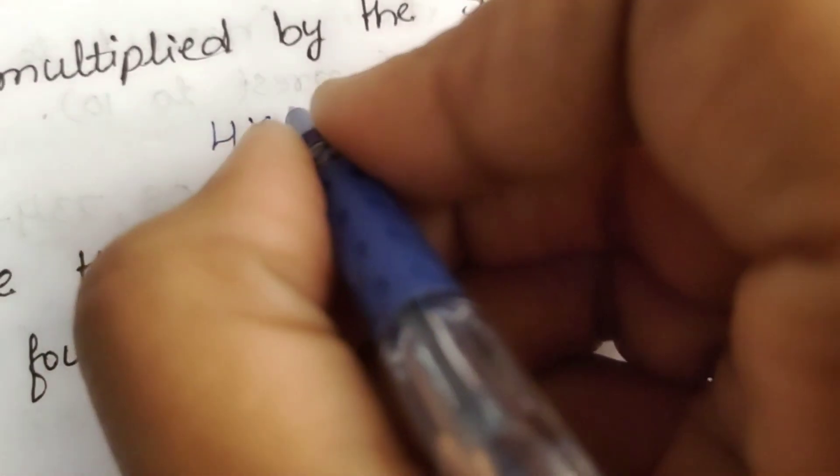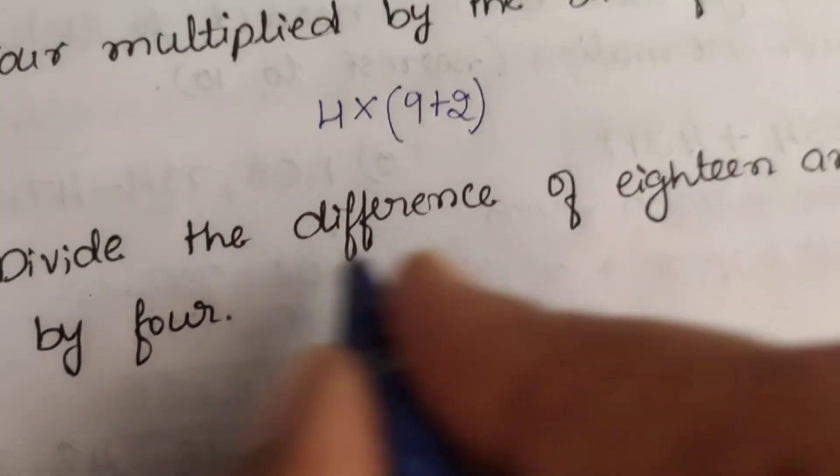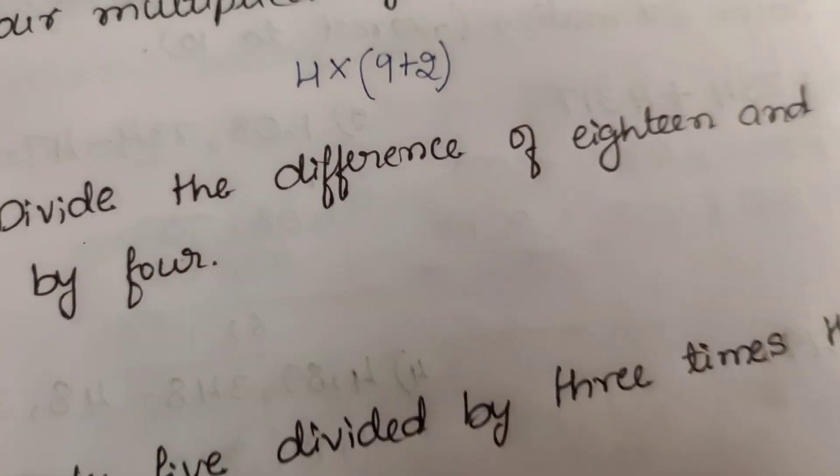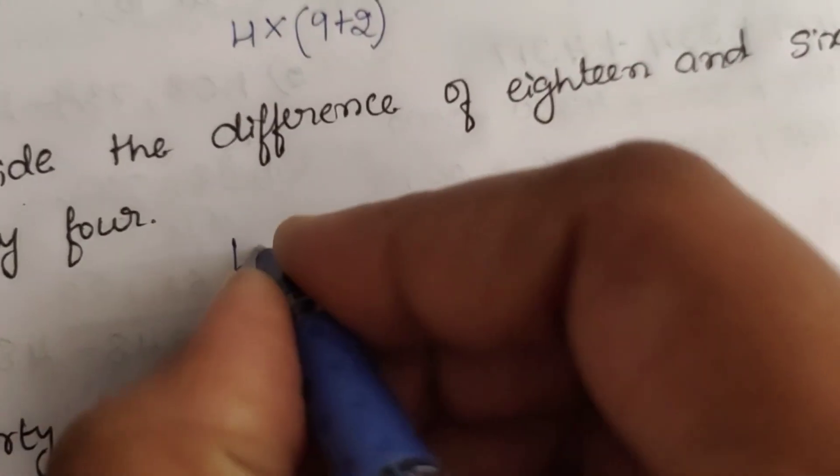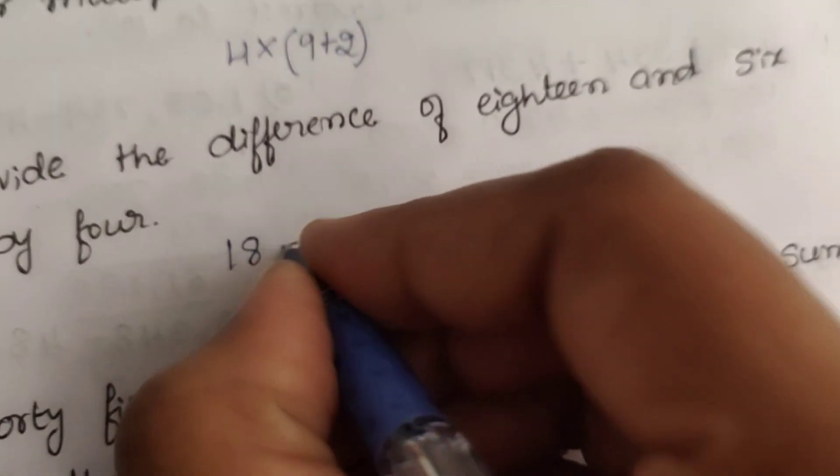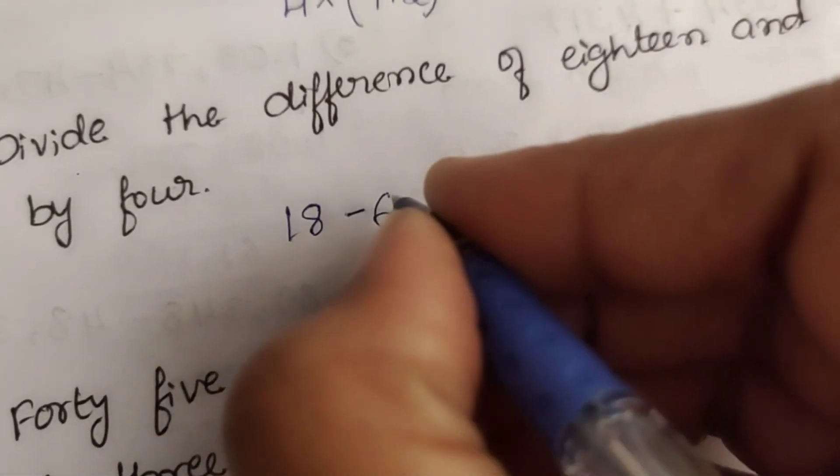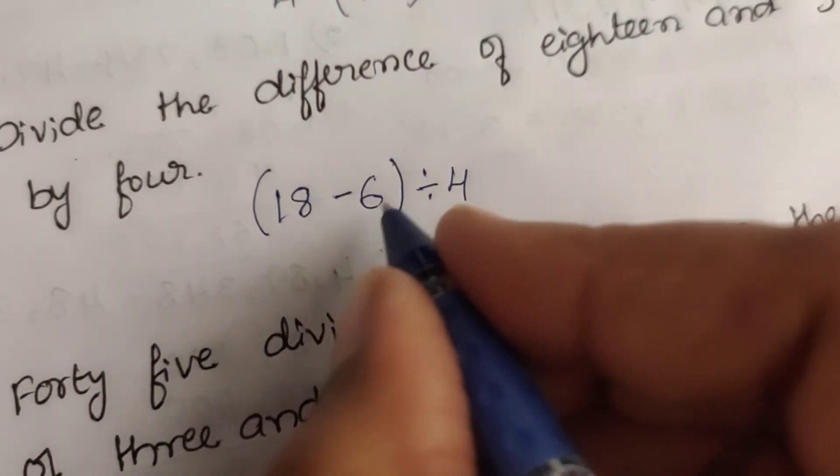Second one: 102 times 4. Third example: divide the difference of 18 and 6 by 4. So divide 18 minus 6, then divide by 4. So the bracket is 18 minus 6, bracket closed, divided by 4.